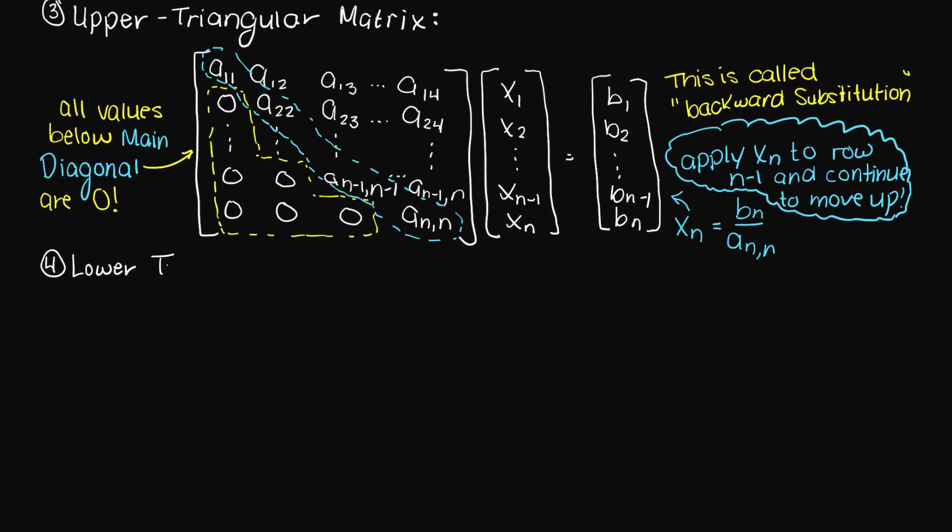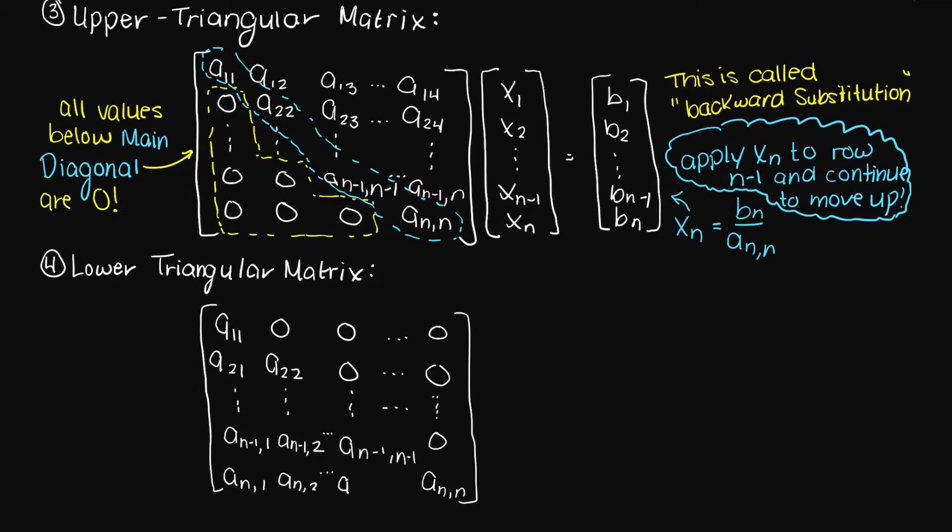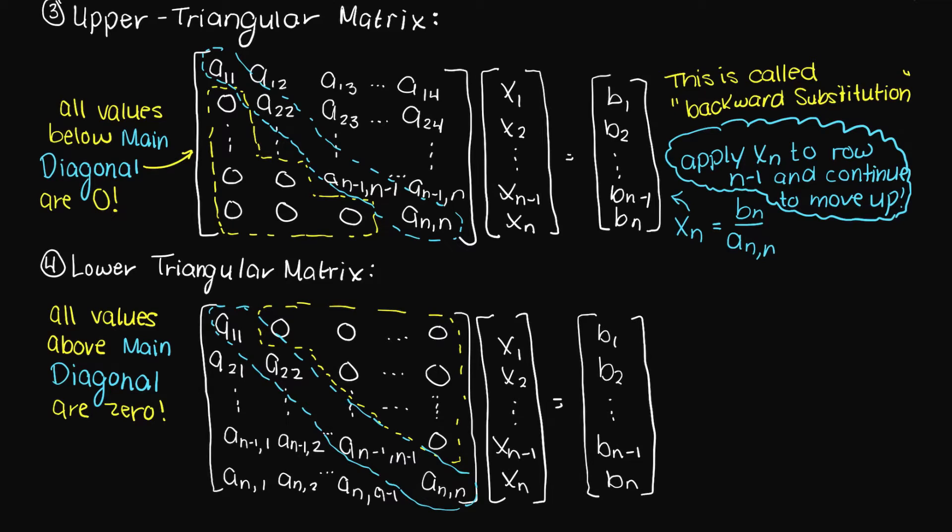The fourth and final type of special matrix is a lower triangular matrix. This is simply the same as an upper triangular matrix, except all the zeros are now above the diagonal and not below it. The process of solving this matrix is the same as well, except instead of working our way up the rows, we will now be working our way down the rows. This process is called forward substitution.